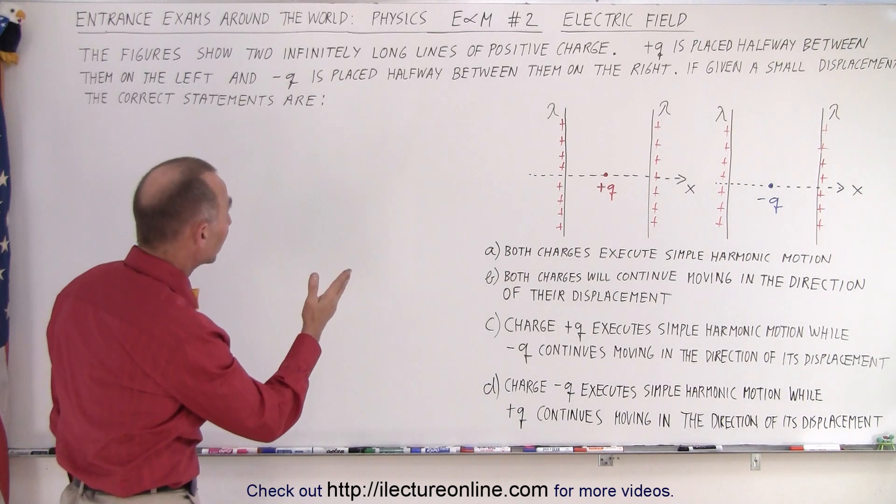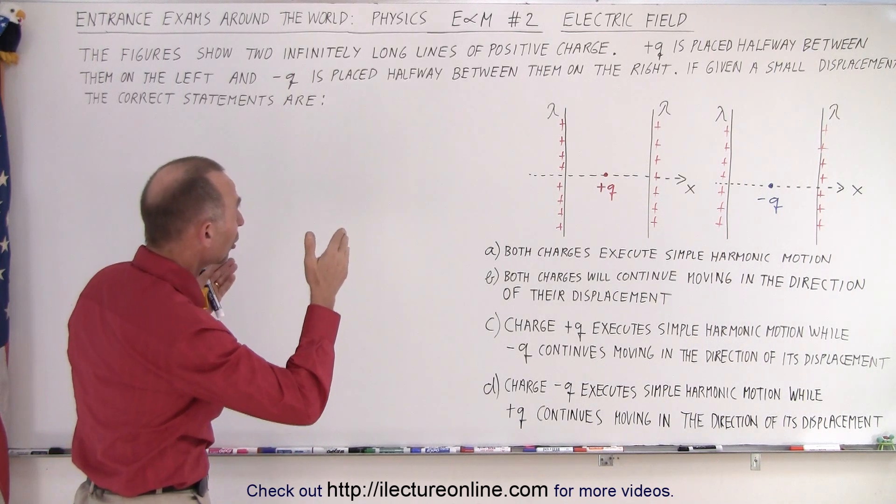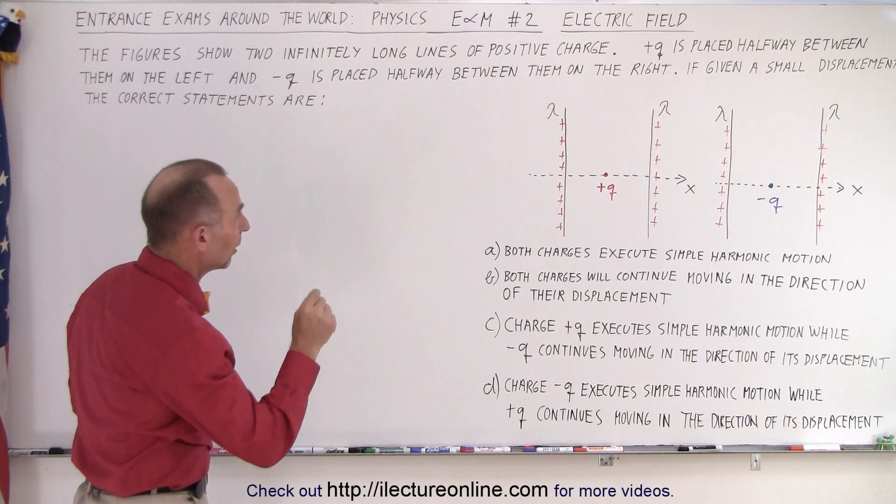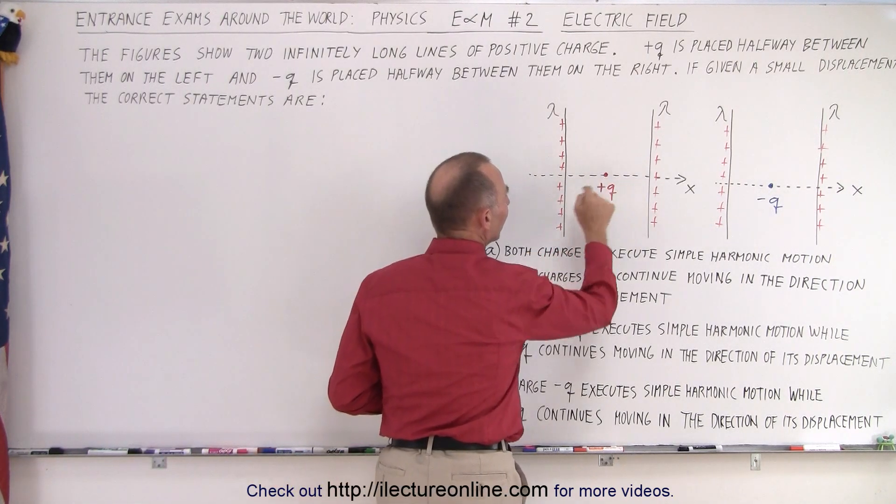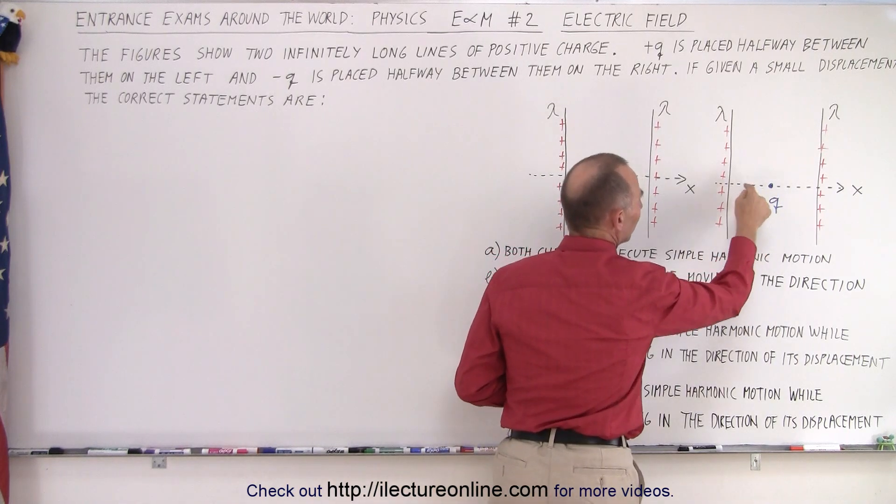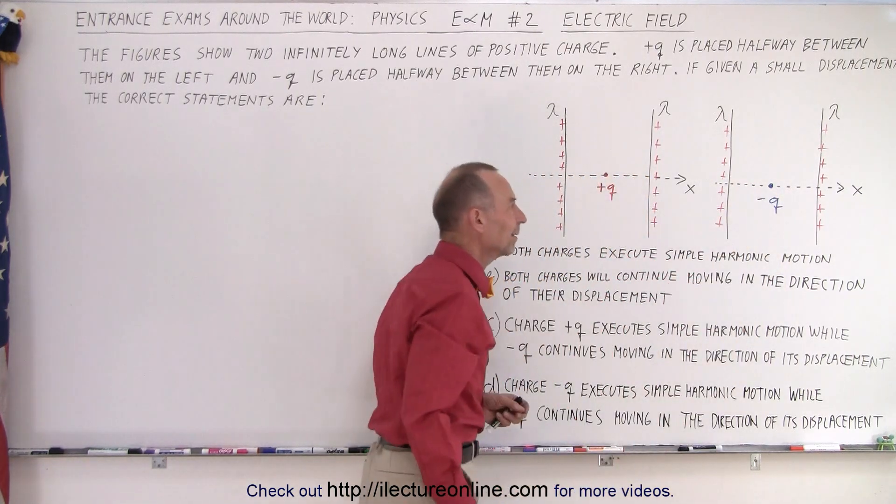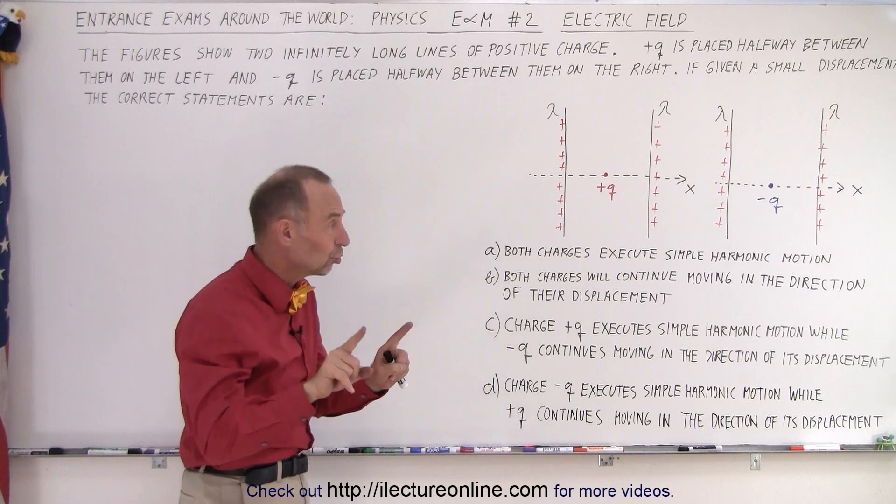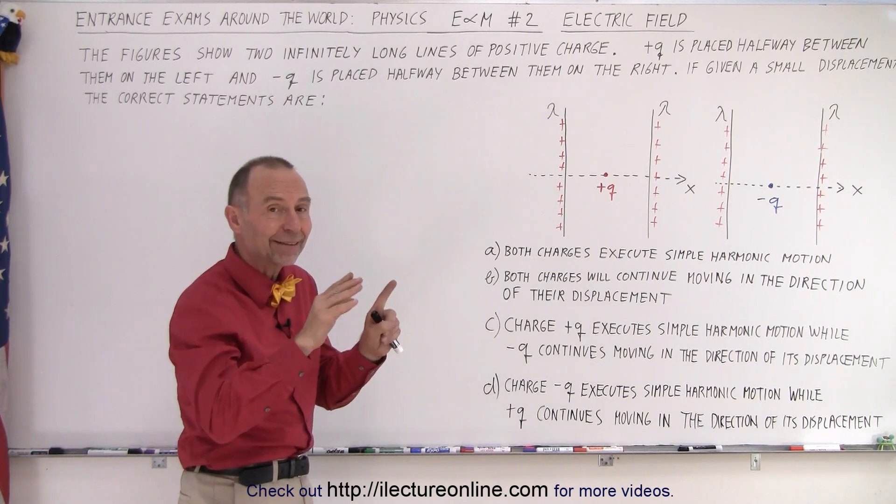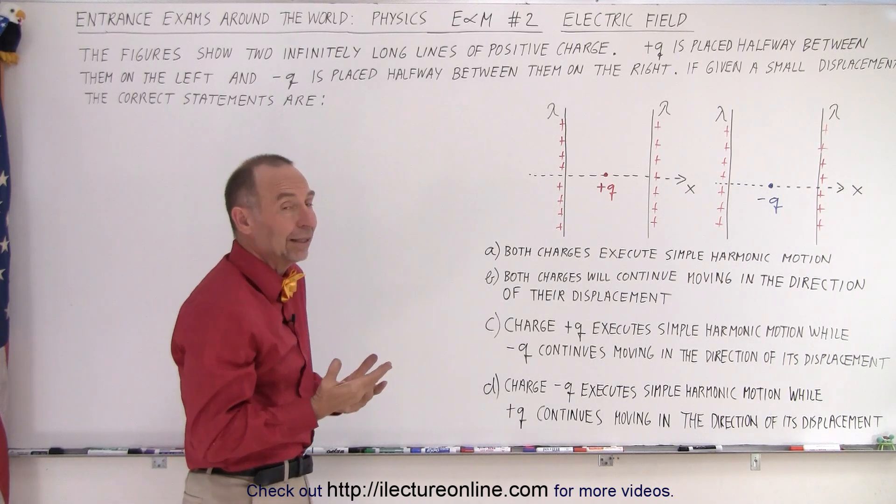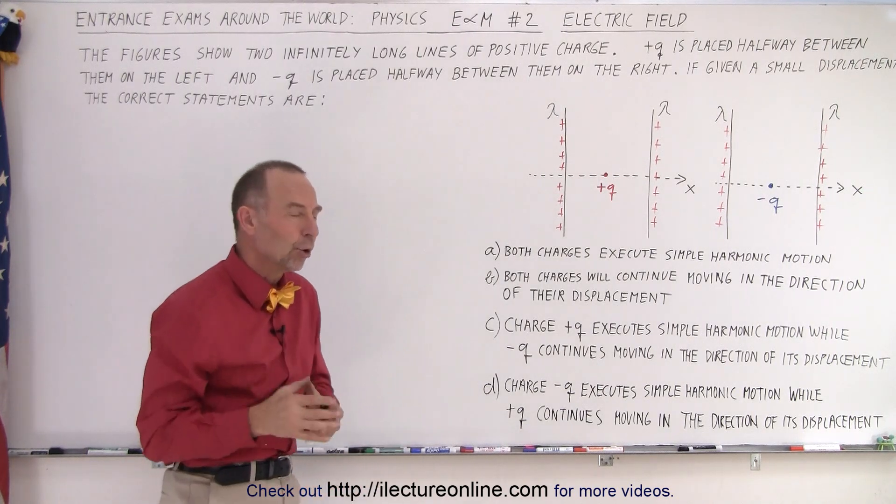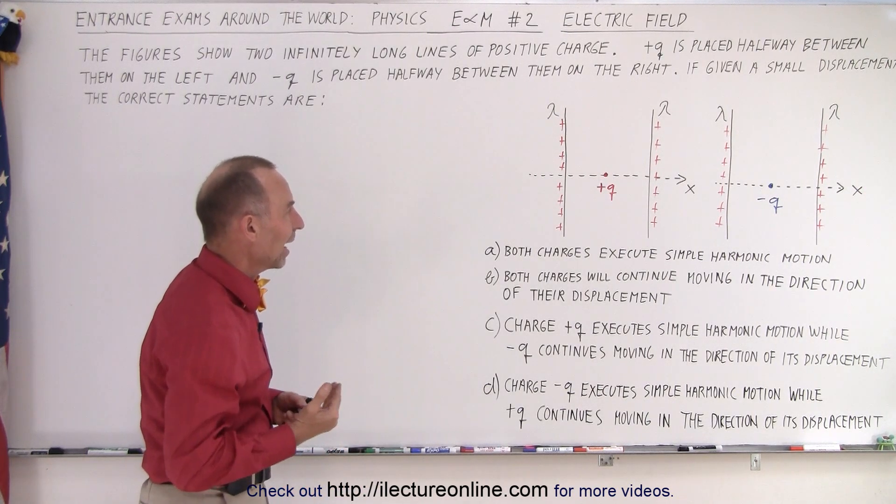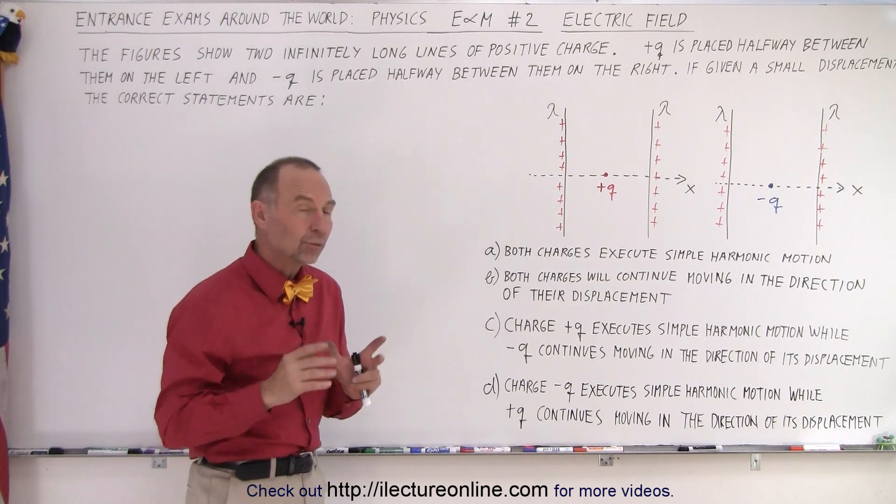We have two figures that show infinitely long lines of positive charge. A positive charge is placed halfway in between on the left side, and a negative charge is placed halfway in between on the right side. Now we're going to push the two charges just a little bit away from that middle point, and then the answer is one of the following four. What kind of motion will ensue after that? So let's take a look at each one separately.